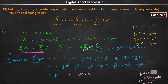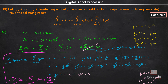Therefore the cross term is 0, and our equation reduces to: sigma from minus infinity to plus infinity of x(n) squared equals sigma of xc(n) squared plus sigma of xo(n) squared. This is exactly what was asked to prove in the question, and we have done that.